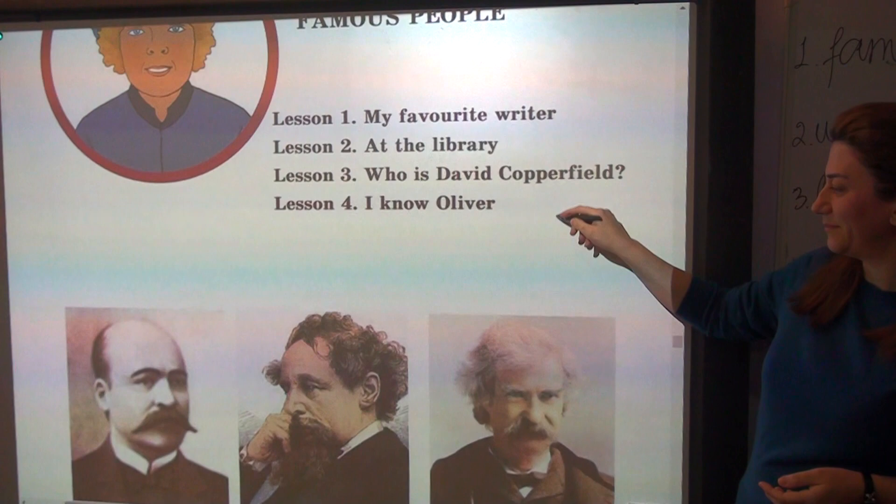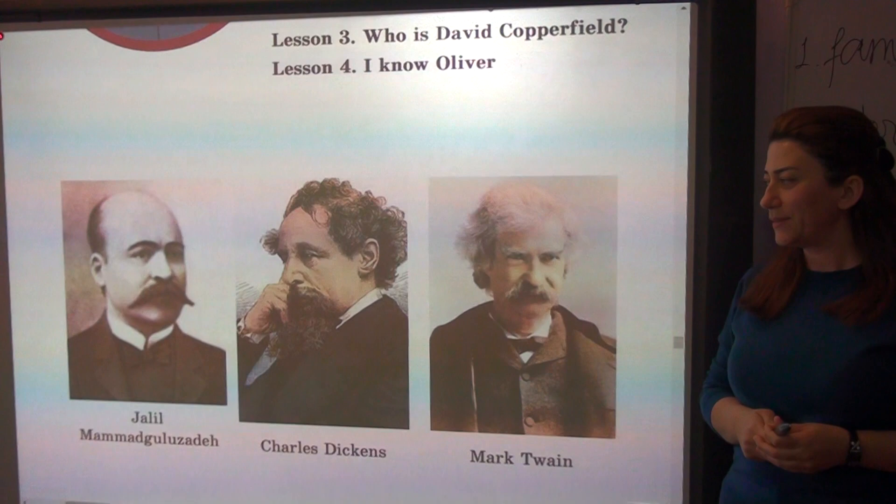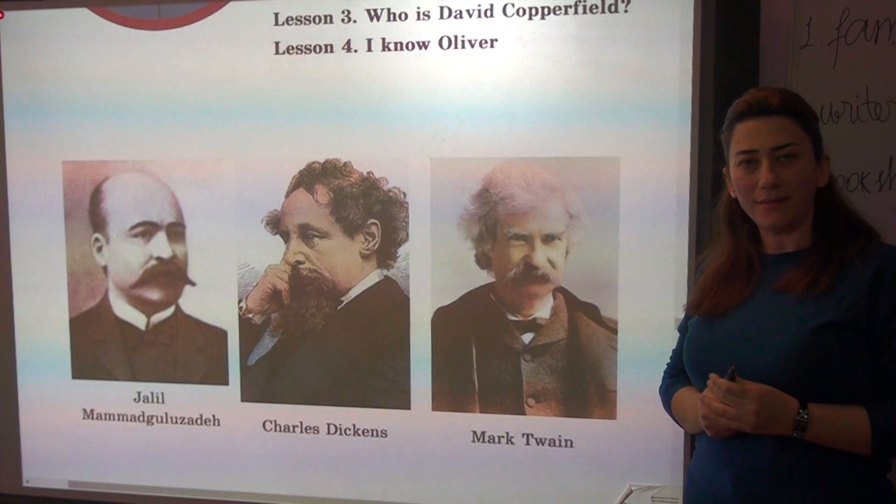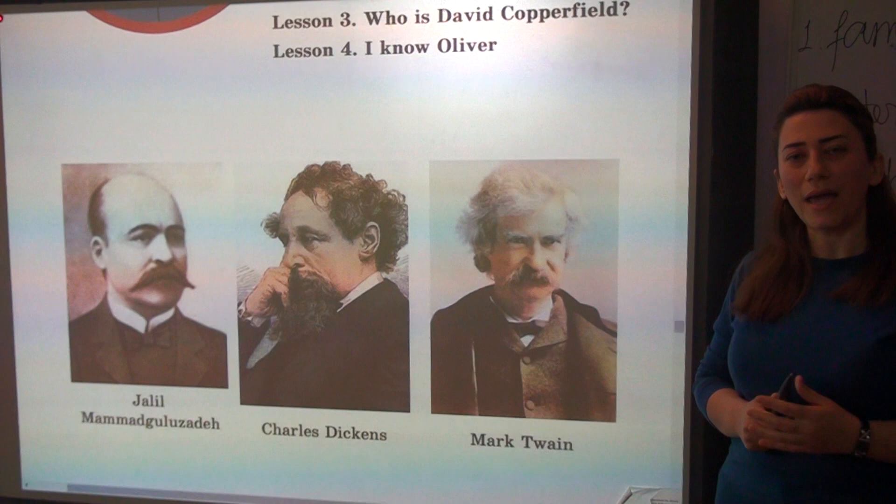Who are they? They are famous writers. They are Caelin Mehmet Uzade, Charles Dickens and Mark Twain. And what are they? They are writers. Who is a writer? A writer is a person who writes books and stories.